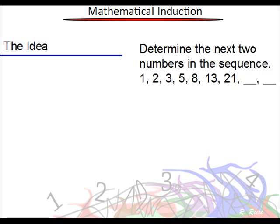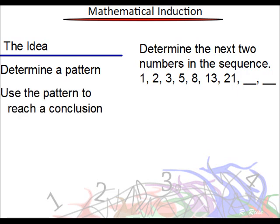Let's say that you were given a sequence like this, and you were to determine the next two numbers in this sequence. What you would try to do is establish what the pattern is. You haven't been told what this pattern is, so you were left up to your own devices to figure it out. Then, after you determine that pattern, you would apply it to reach a conclusion — in this case, what are those two numbers. The pattern is that you simply add the previous two values to get the subsequent values. So one plus two is three, two plus three is five, and so on.